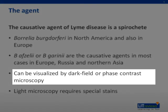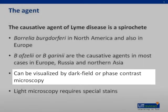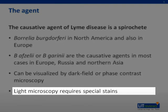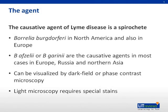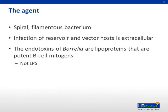The spirochete can be visualized by dark field microscopy or phase contrast microscopy. Light microscopy requires special stains in order to visualize the bacterium. The agent is a spiral filamentous bacterium. Infection of reservoir and vector hosts is extracellular and not intracellular. The disease is mediated by endotoxins, which are lipoproteins and not LPS. These lipoproteins are potent B-cell mitogens.